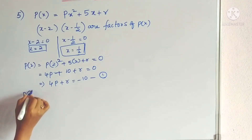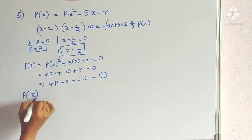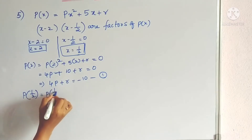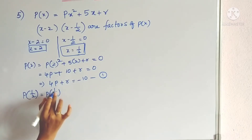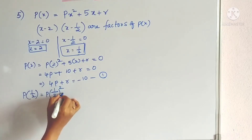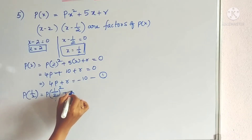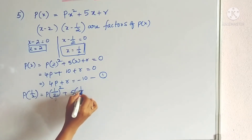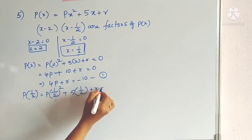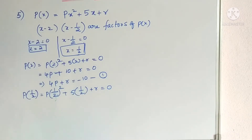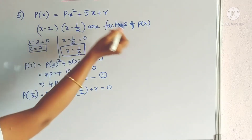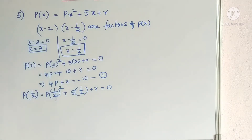Similarly, we find p(1/2): substitute x = 1/2, giving p(1/2)² + 5(1/2) + r equals zero, because (x minus 1/2) is a factor of p(x) and the remainder should be zero.